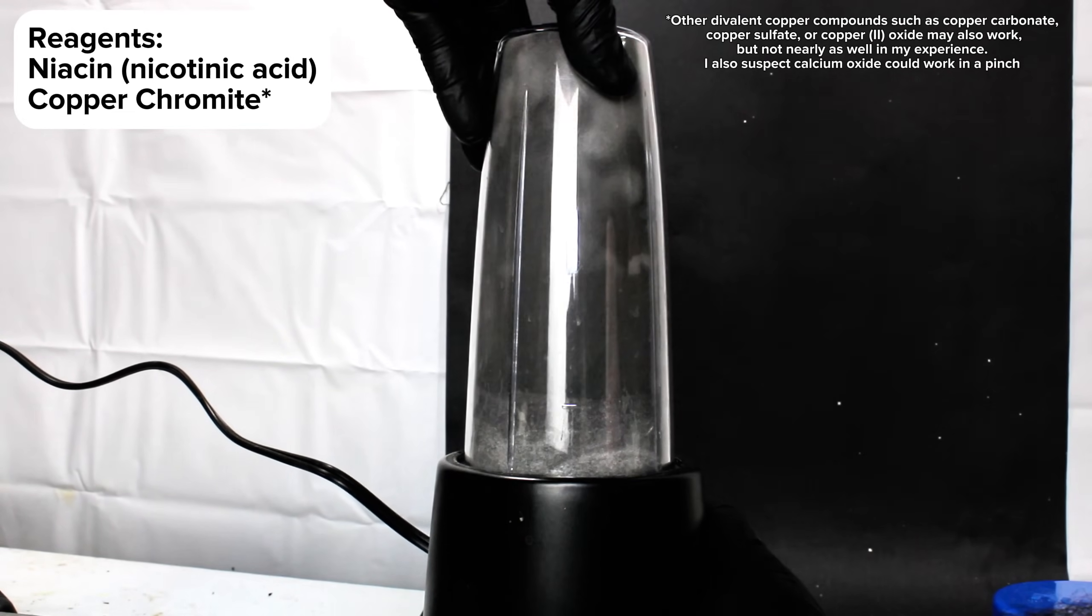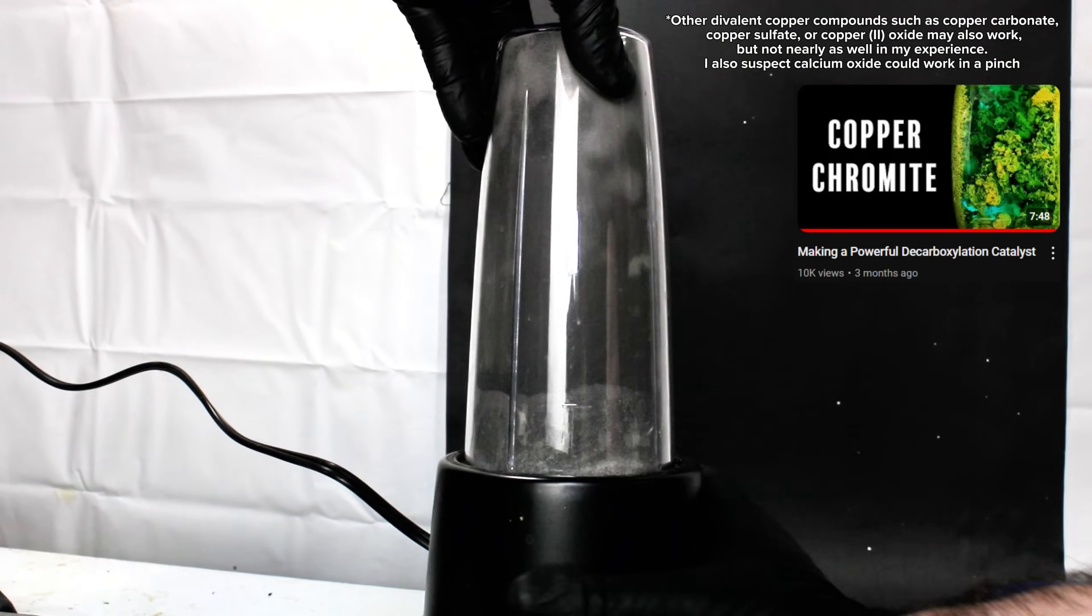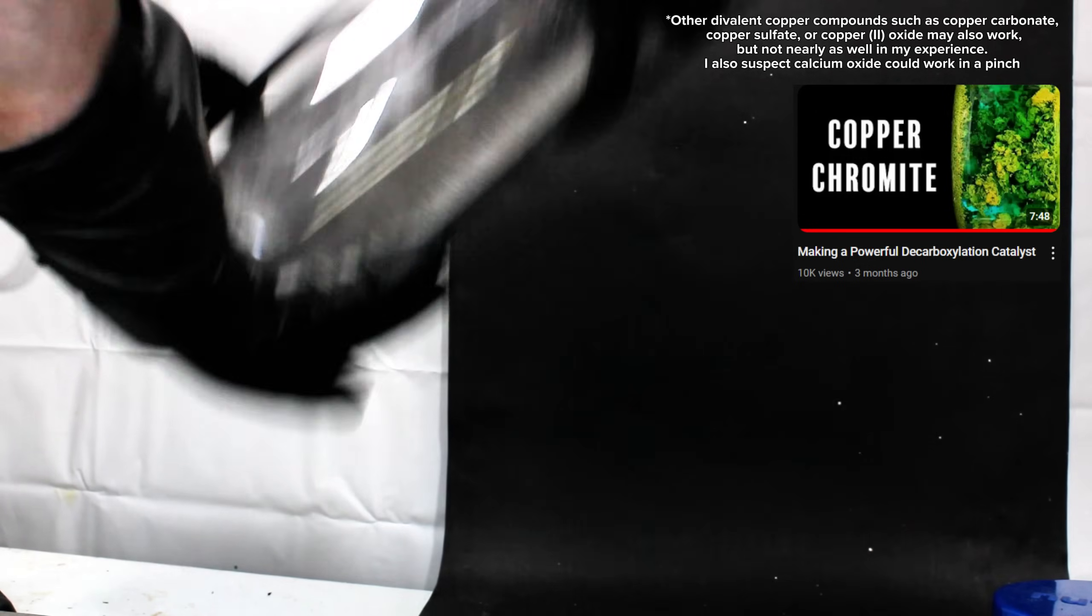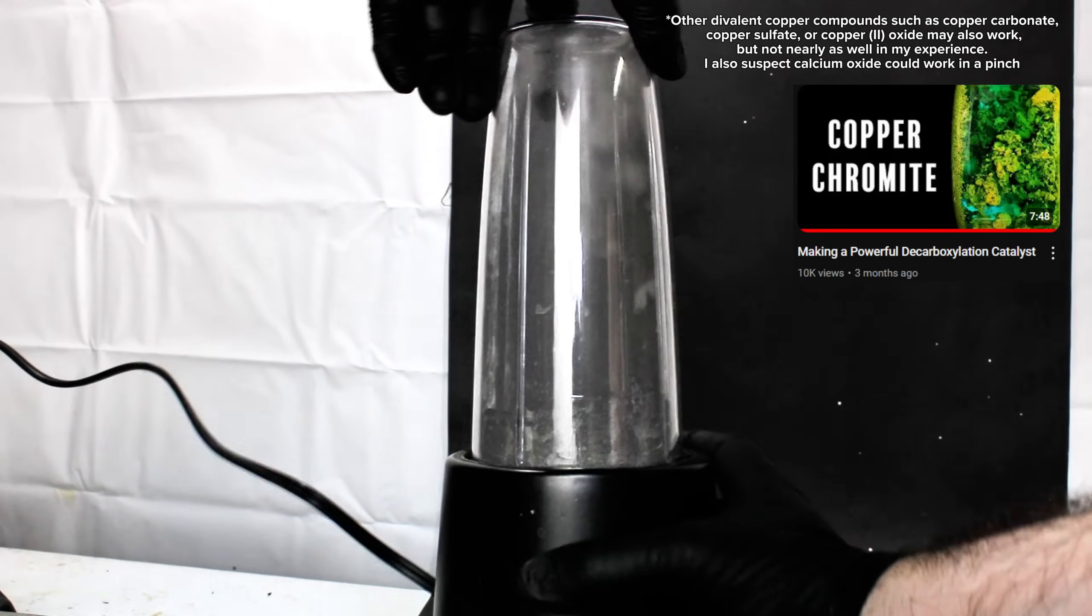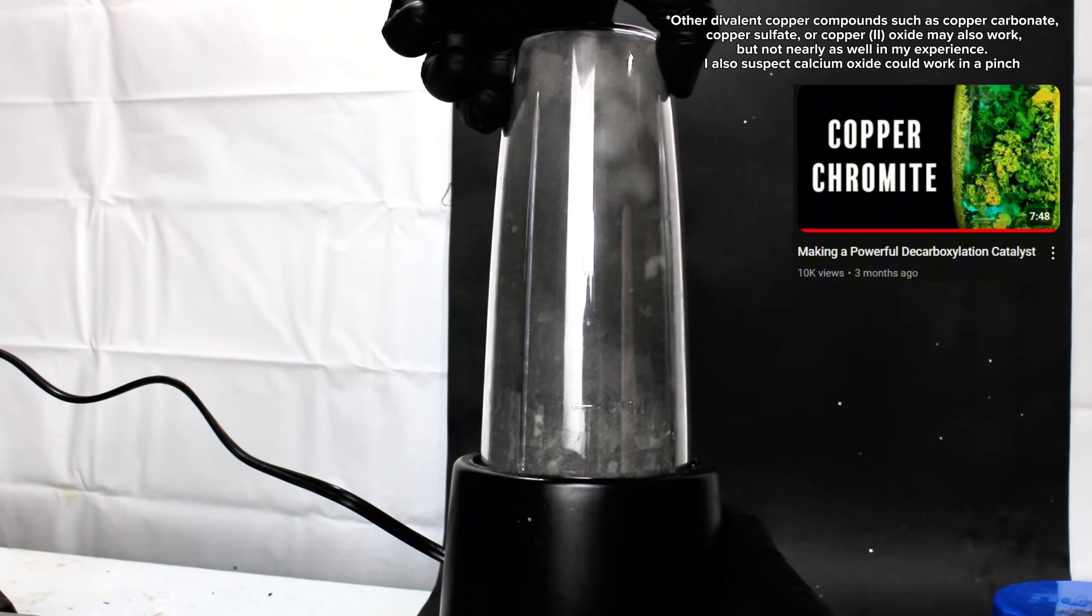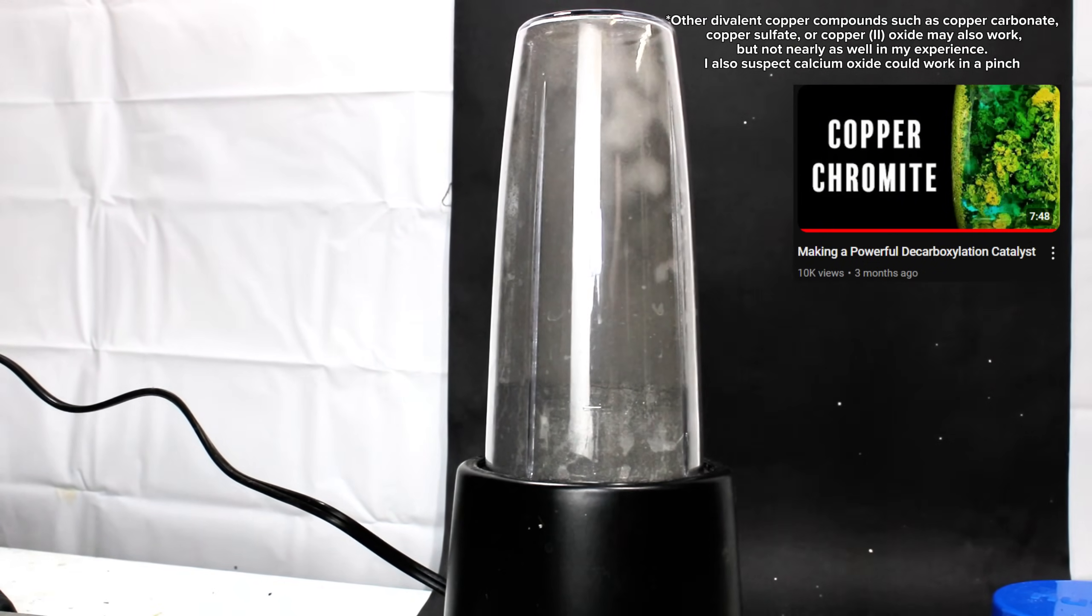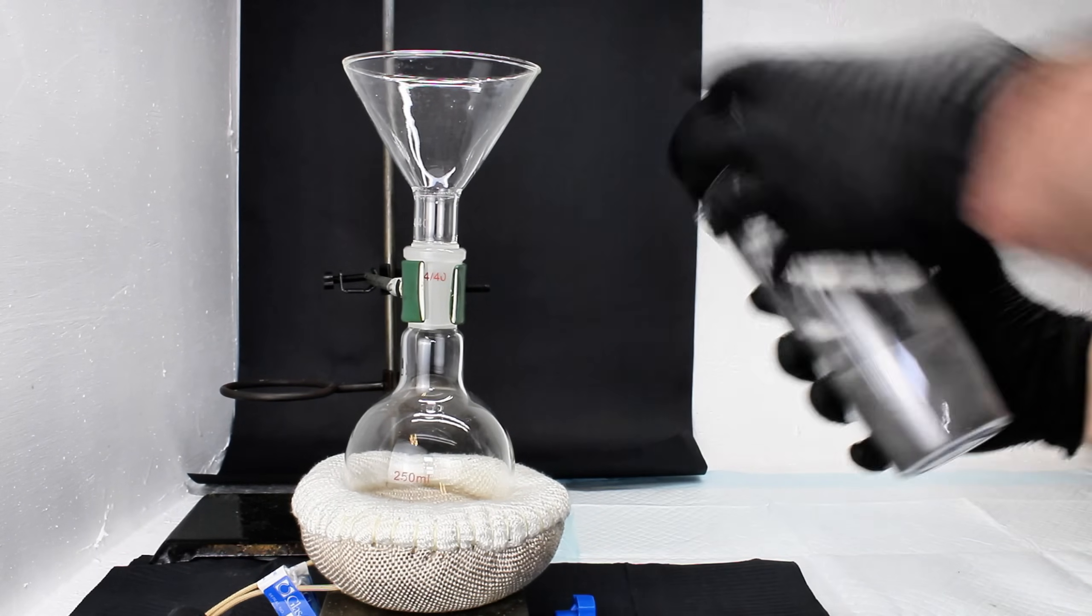While niacin can be easily purchased anywhere online, I had to make the copper chromite myself, which I did in a video a few weeks back. If making copper chromite looks like too much work, other copper compounds such as copper carbonate or copper oxide can be used instead. The only problem with these is that they're a lot harder to recover or reuse, and from what I've seen they tend to result in significantly lower yields.